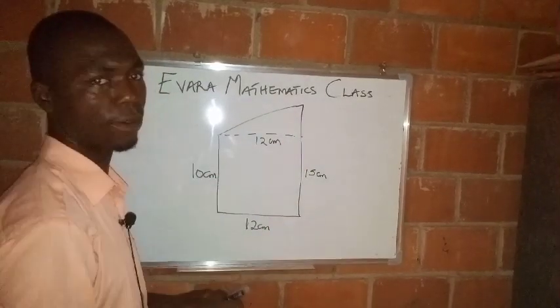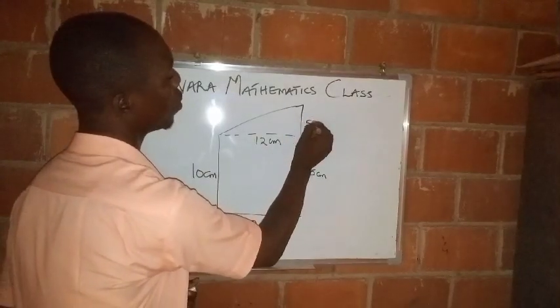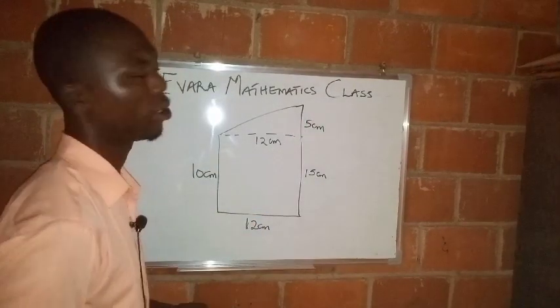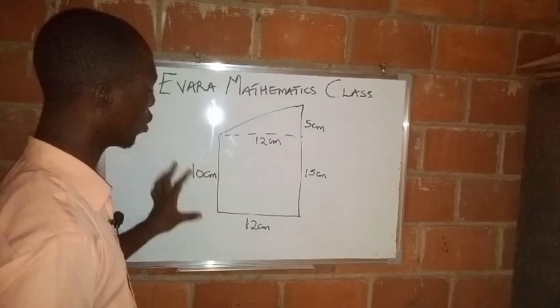So if the whole of this distance is 15, that means this place will be 5 if you subtract 10 from 15.